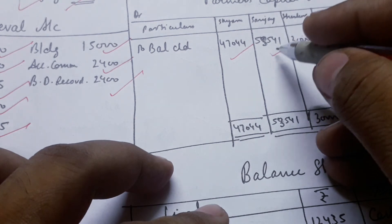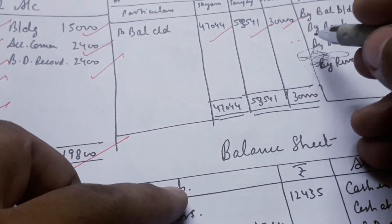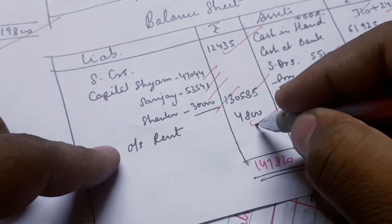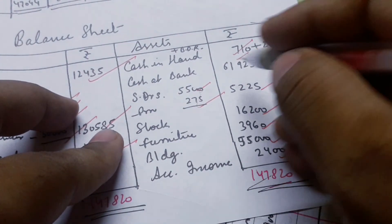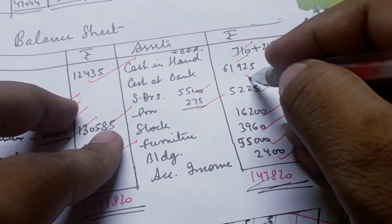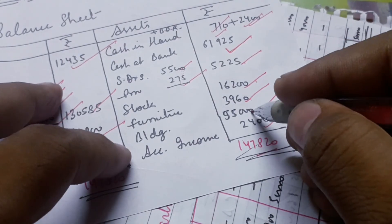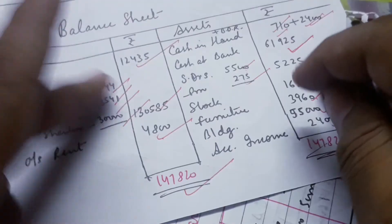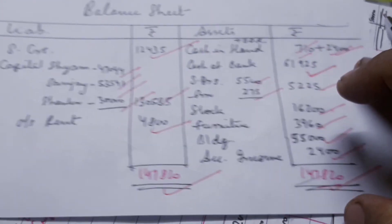Revenue raised under 12,480 and the old ratio of partners gives 4,994 and 7,491. The revaluation account is complete. In the capital account: previous partner capital, new partner capital, PFG part in 2:3 ratio, revaluation capital, and closing balances of 47,044, 35,541, and 30,000. Balance sheet: capital as it is, outstanding rent. Cash in rent was 710, bank 1,1925 with 30 capital and 20 premium added. Debtor, stock, furniture, building, and accrued income included. Question 63 is complete.